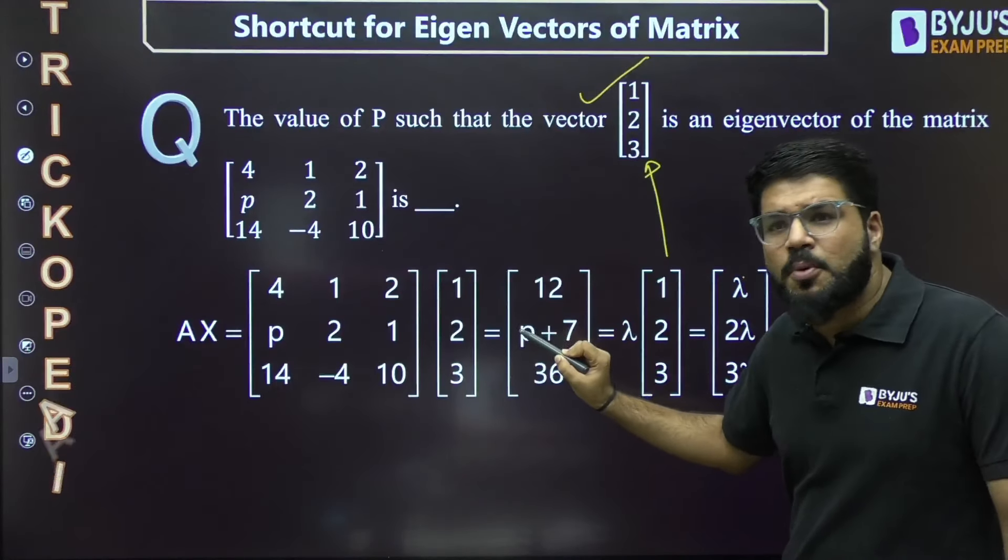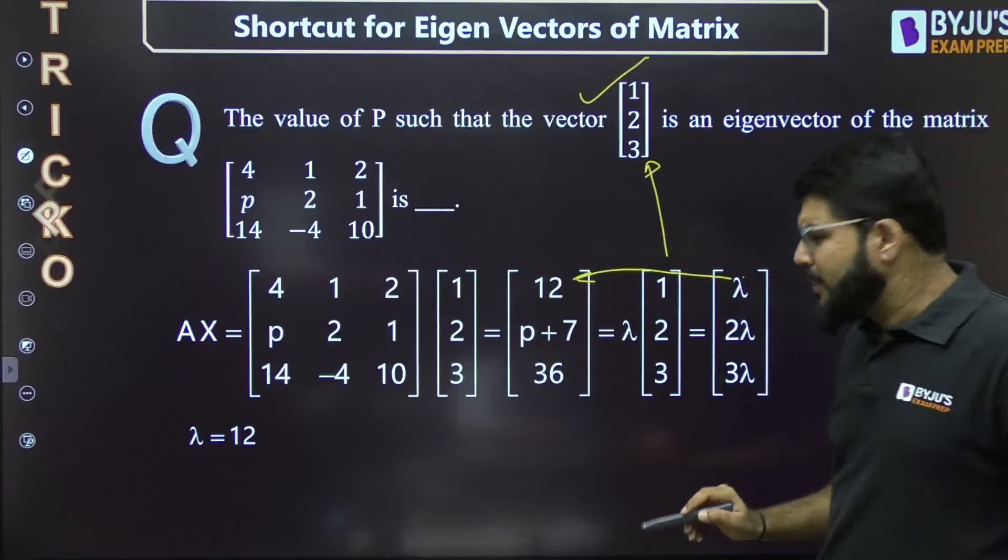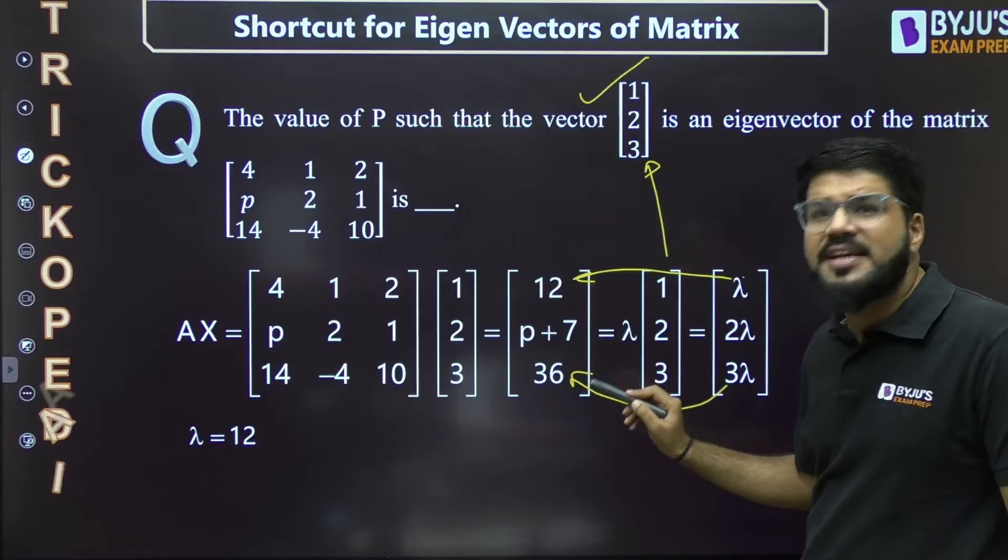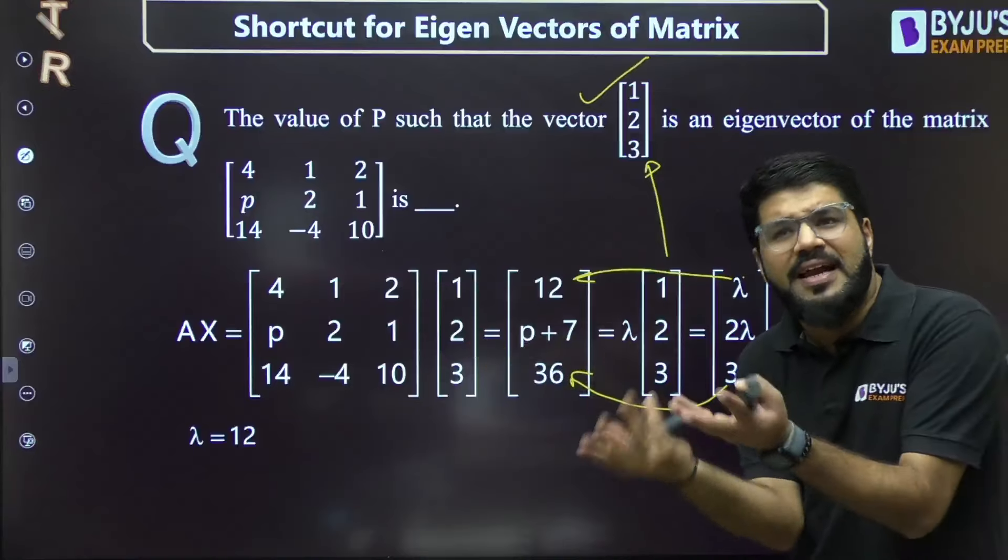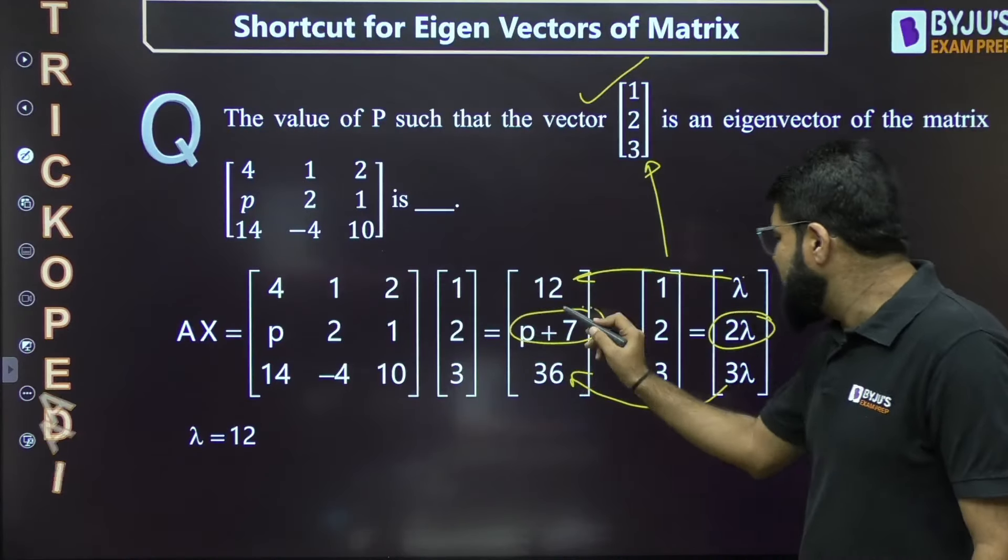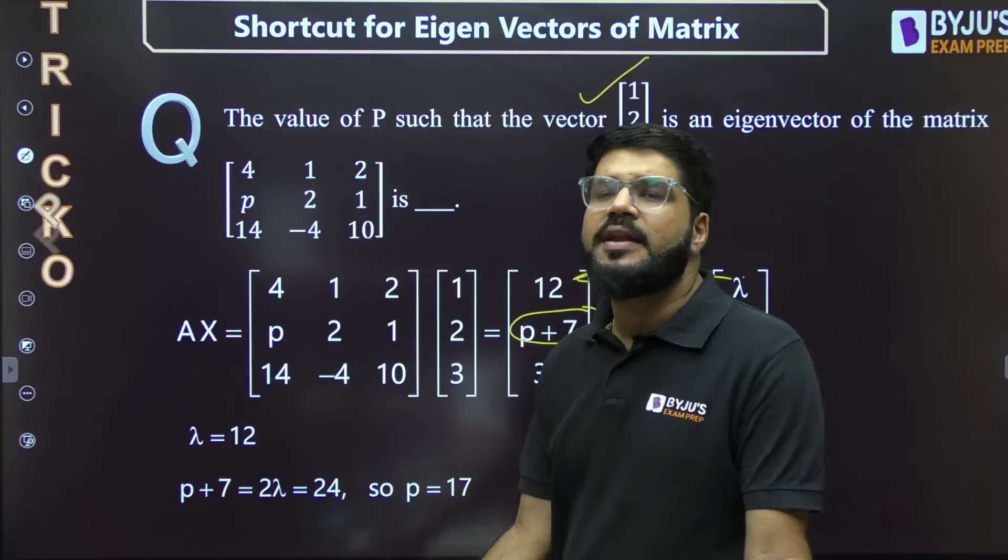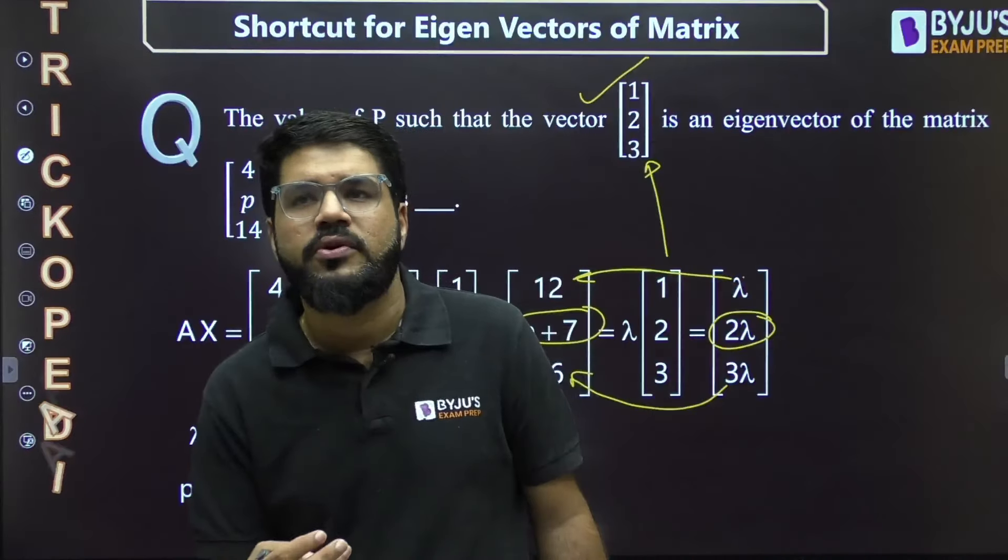So λ should be 12, and that's why 3λ = 36 - everything is satisfied. λ was not given, but is now calculated. If λ is known, p+7 should be 2λ, so 2λ becomes 24, and p = 17. Entity question also solved within seconds.